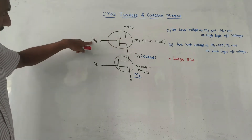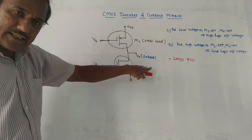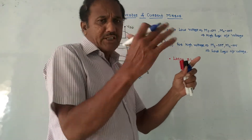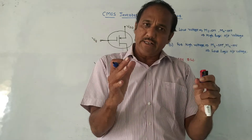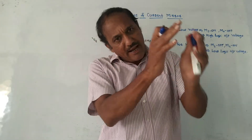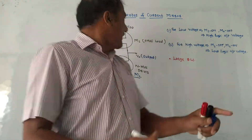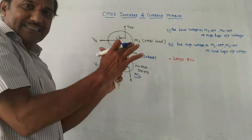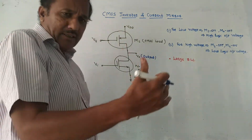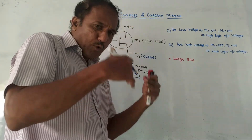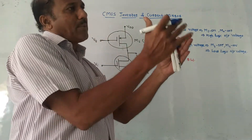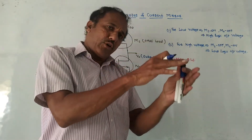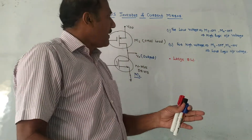The voltage applied at the gate terminal of M1 is Vg and the voltage applied at the gate terminal of M2 is Vi. Whenever P and N MOS are connected together, it is called complementary, and this circuit acts as an inverter — meaning the output will be inverted. If you apply high at the input, output will be low; if you apply low at the input, output will be high.